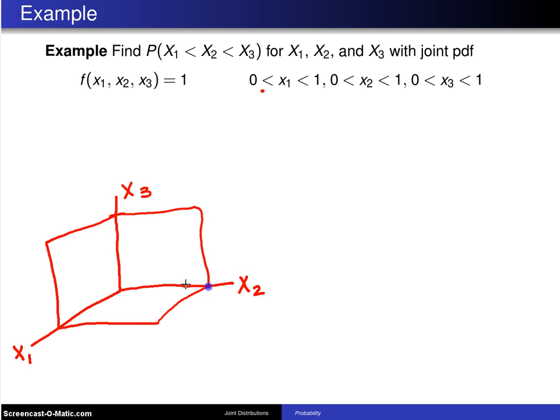So that looks something like that. And we are interested in the probability x1 is less than x2 is less than x3.